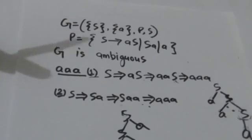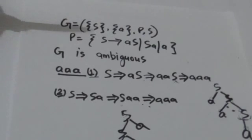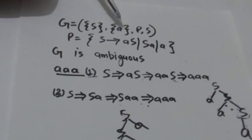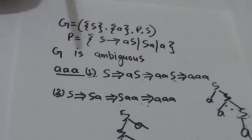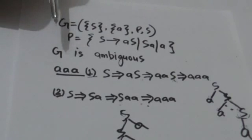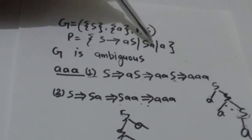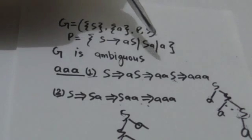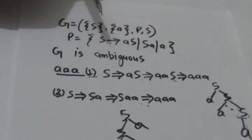It would be more clear after this example. Consider this grammar G — it has one variable S which is the start symbol, it has one terminal that is a small 'a', and P is a set of production rules. These are the productions in set P: S derives AS, S derives SA, S derives A.